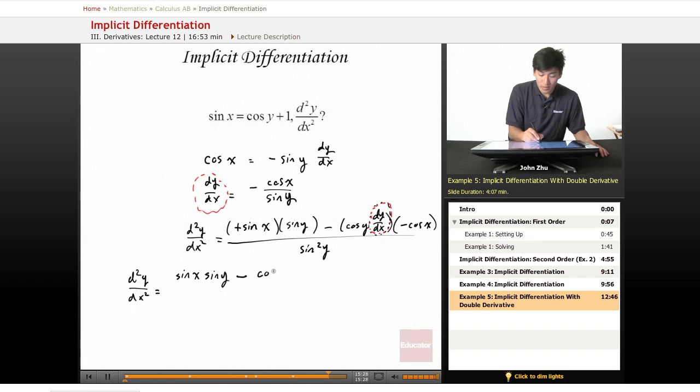So we'll rewrite this: cosine of x, cosine of y times cosine of x, sine of y, and all this is divided by sine squared of y.